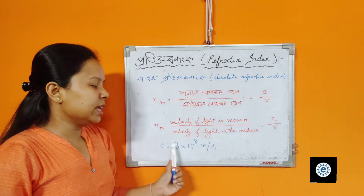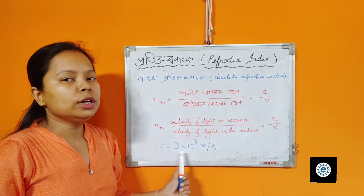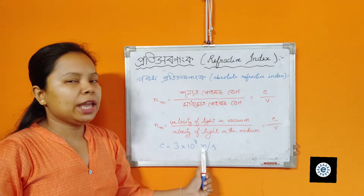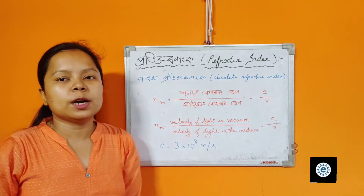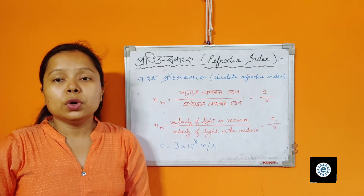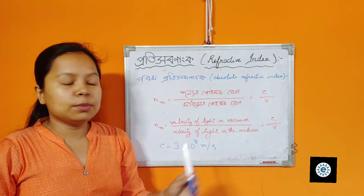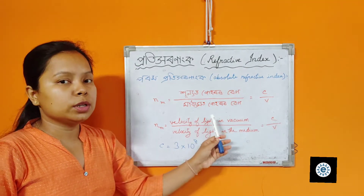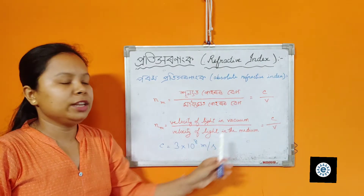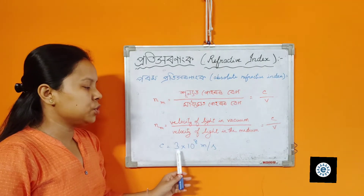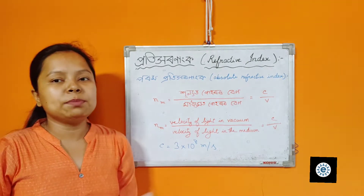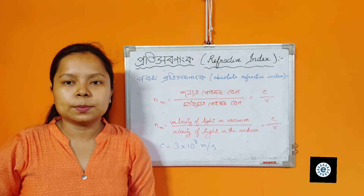The velocity of light in vacuum, c, is 3 × 10⁸ meters per second.